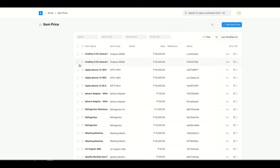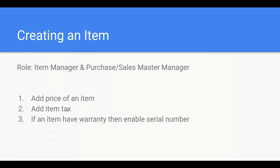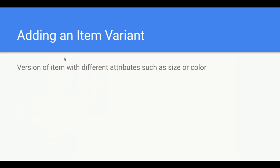That was all about creating an item. Next, we need to create an item variant and see how that works. An item variant has different versions of an item. For example, we created a OnePlus item, and now I'll create another OnePlus item with three or four different variants.